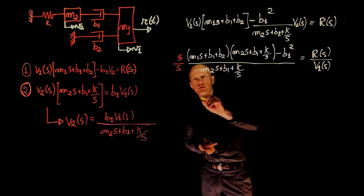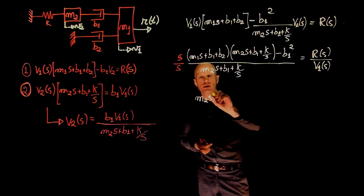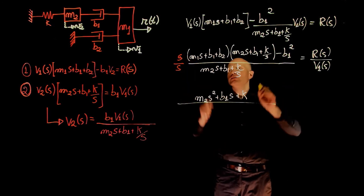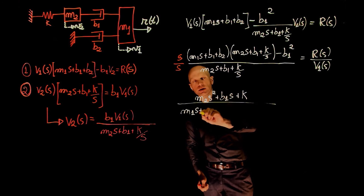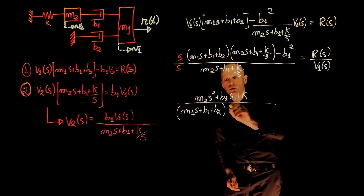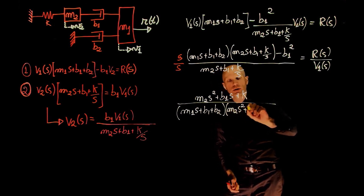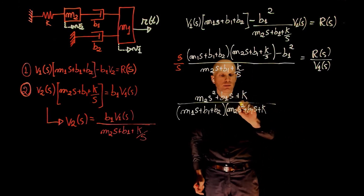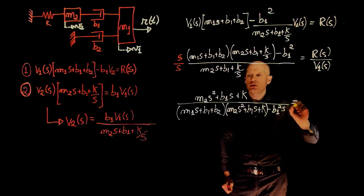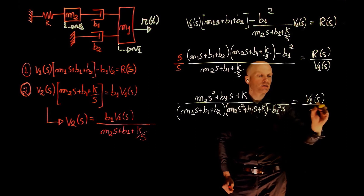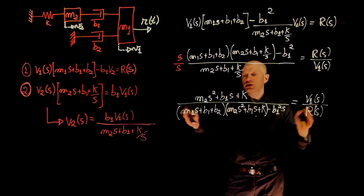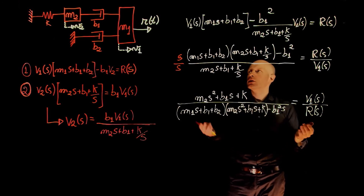Multiplying through by s, the numerator becomes (m2*s² plus b1*s plus k), and the full expression for the transfer function V1(s)/R(s) is: s*(m2*s² plus b1*s plus k) divided by [(m1*s plus b1 plus b2)*(m2*s² plus b1*s plus k) minus b1²*s]. This is the transfer function between r and v1.